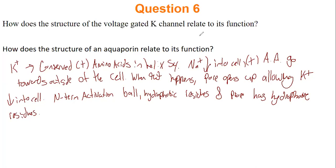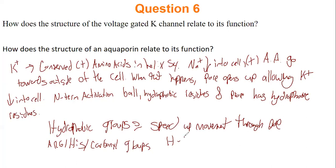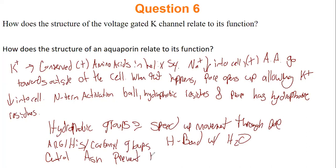A student asked to write down the aquaporin summary. On the board: hydrophobic groups speed up movement through the pore; arginines, histidines, and carbonyl groups H-bond with water; central asparagines prevent proton hopping. Also noted: the aquaporin has an hourglass shape.